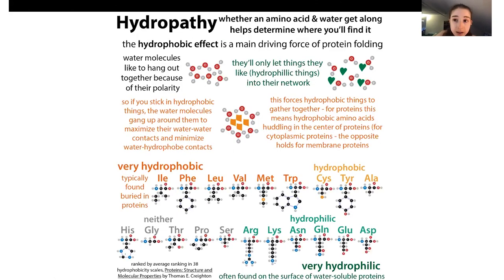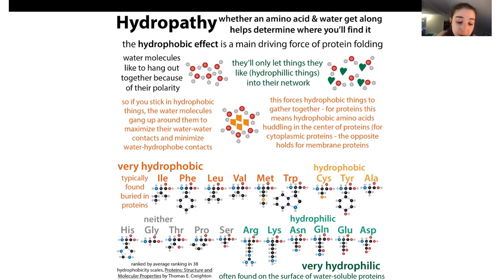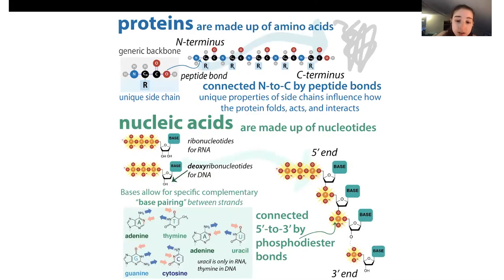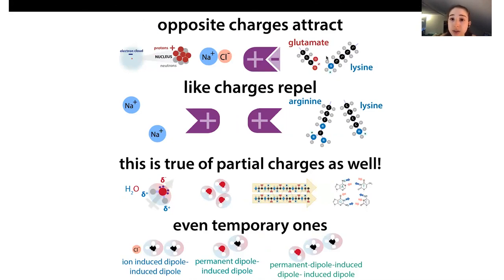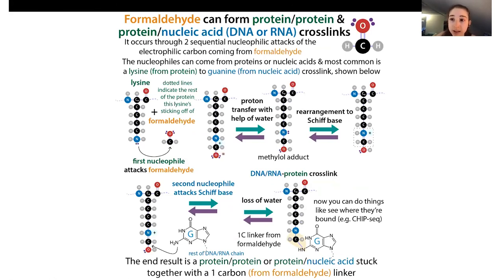Lysine is the most common for a few reasons: it's the most nucleophilic with that nitrogen, and practically it is most likely to crosslink when talking about DNA-protein interactions. Lysine is very hydrophilic - it likes water and tends to be found on the outside of proteins. It also tends to be positively charged, and the backbone of DNA is negatively charged - opposite charges attract - so lysine tends to be involved in binding to DNA and is already in close proximity.